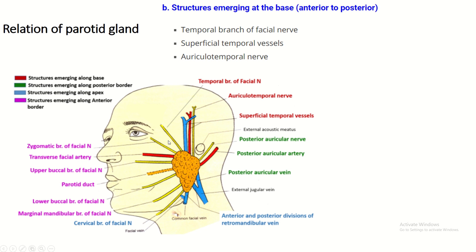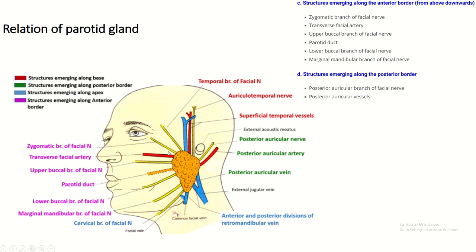The base of the parotid gland is related to the temporal branch of the facial nerve, auriculotemporal vessels, and the auriculotemporal nerve. The anterior border relations include: the zygomatic branch of the facial nerve, the transverse facial artery, the upper buccal branch, the parotid duct, the lower buccal branch, and the marginal mandibular branch of the facial nerve. The posterior border is related to the posterior auricular nerve and posterior auricular vessels.